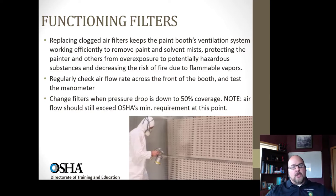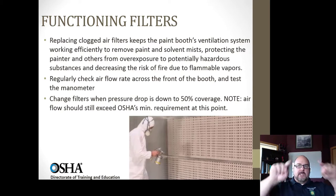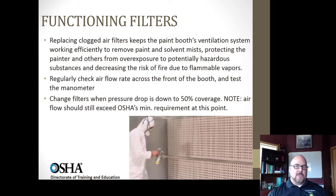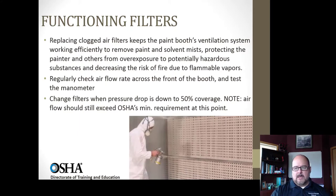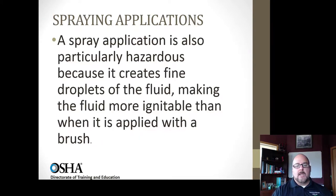When I inspect a spray booth, I make sure there's a 36-inch clearance all the way around with no flammable materials nearby. I check that the lighting is intrinsically safe and that there's no unrated electrical equipment within a certain distance. The spray guns should be interlocked with the ventilation so you can't spray unless the ventilation is on. I then create a grid at the face of the booth, take air measurements every few feet, write them down, average them, and confirm the face velocity is above 100 feet per minute.